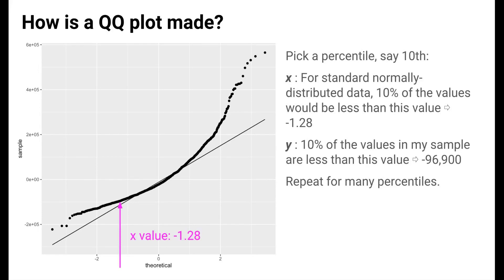To get the y value of a point on a Q-Q plot, we ask about the same percentile, but this time in our sample. 10 percent of the values in my sample are less than one value. This value is 96,900. We repeat this process for many different percentile values to get all the points on a Q-Q plot.